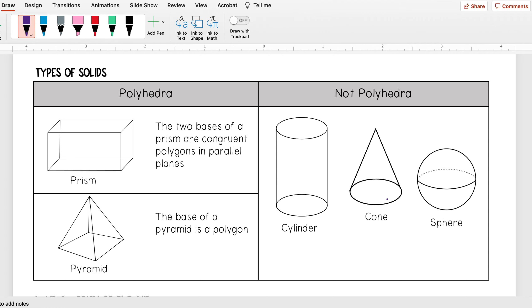We have the first one which are prisms, and these are when the two bases of a prism are congruent polygons and parallel planes. So for instance, this would be a rectangular prism because my two bases are rectangles—my one base here, my one base here.